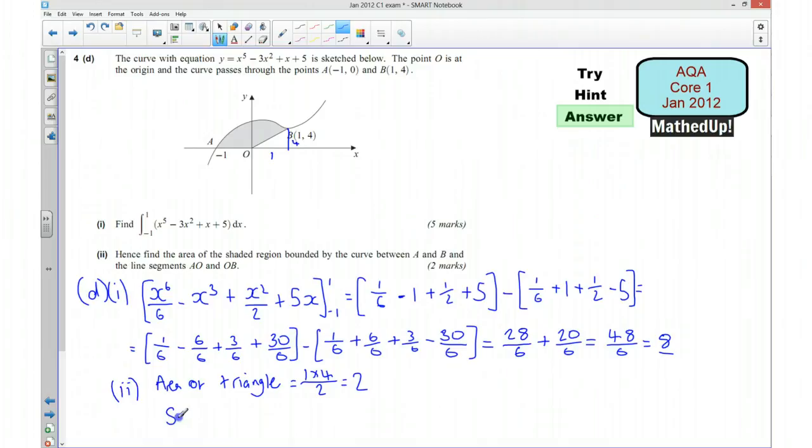So our shaded area is going to be equal to 8, which is all of this area, take away 2, which gives us 6. So the shaded area is going to be 6 square units.